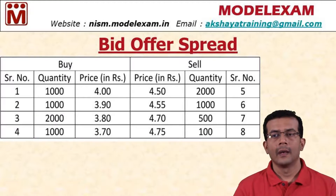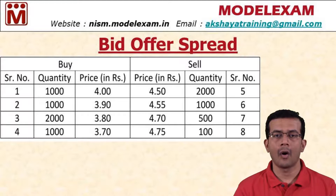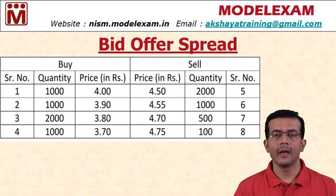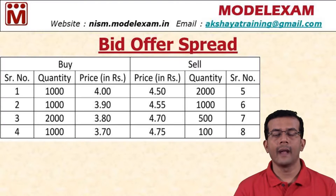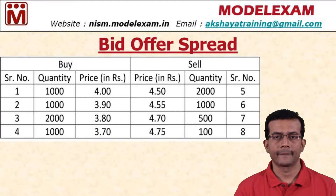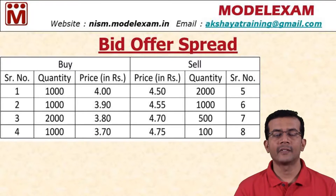On the right side, the first row shows a quantity of 2000 at 4.50 rupees — meaning 2000 shares are on offer at 4 rupees 50 paise. The second row shows quantity 1000 at 4.55 rupees. On the offer side, prices are in ascending order, so the lowest offer is placed at the top. When the bid and offer price match, the trade happens — the order gets executed. Only when the buyer and seller meet at a common price does the trade occur.